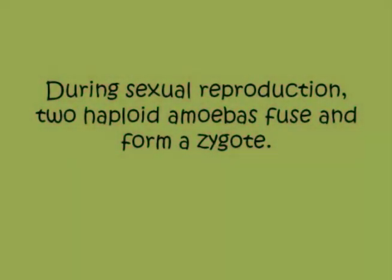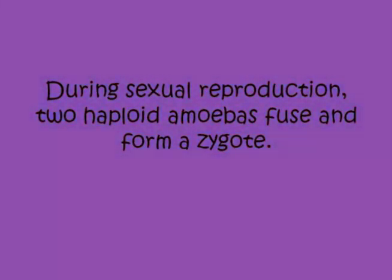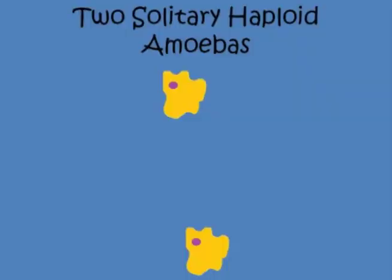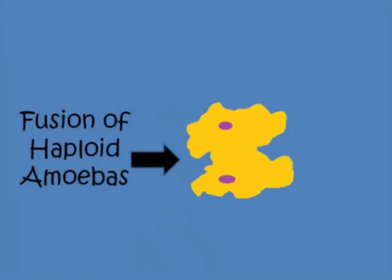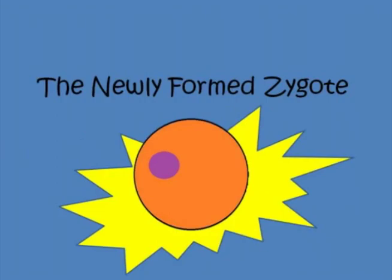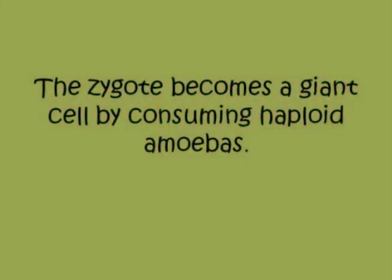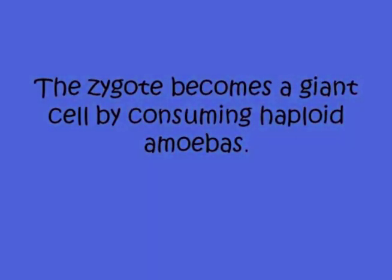During sexual reproduction, two haploid amoebas fuse and form a zygote. The zygote becomes a giant cell by consuming haploid amoebas.